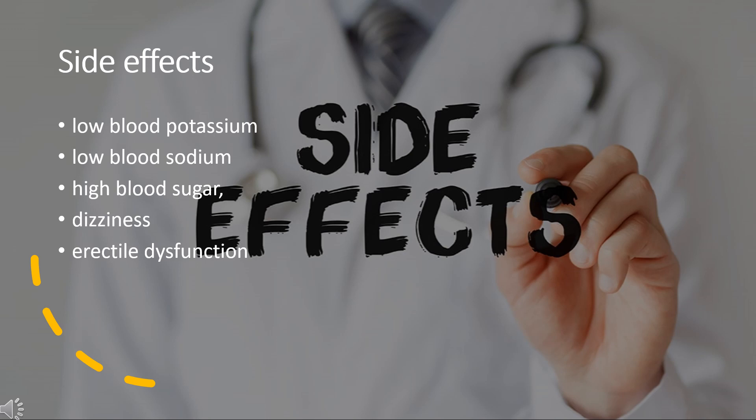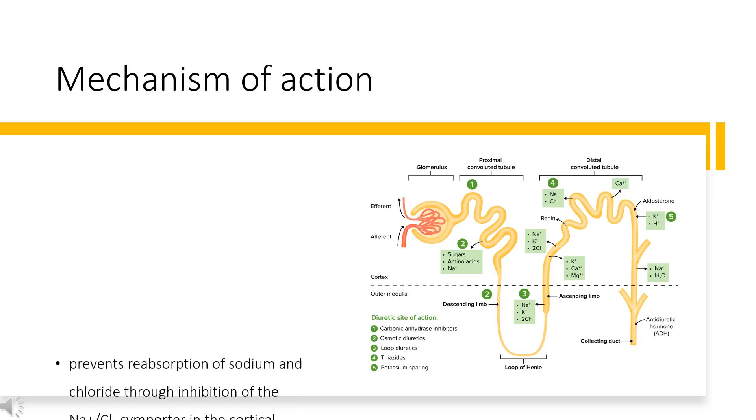Other adverse effects may include gout, low blood magnesium, high blood calcium, allergic reactions, and low blood pressure. Some reviews have found Chlorthalidone and hydrochlorothiazide to have a similar risk of adverse effects, while other reviews have found Chlorthalidone to have a higher risk.